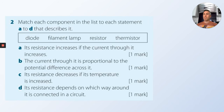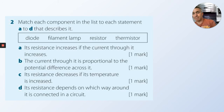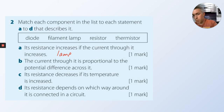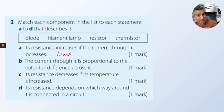Match the component on the list to each statement. Resistance increases if the current through it increases — we just did that — that is a lamp. The current through it is proportional to the potential difference across it — that's Ohm's law.